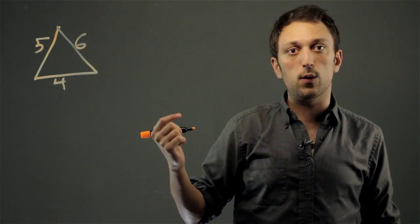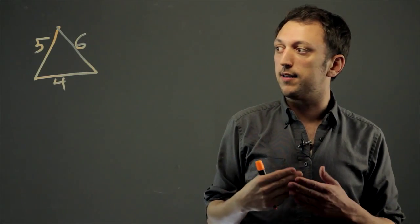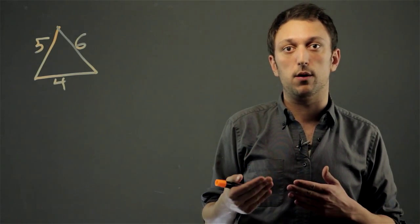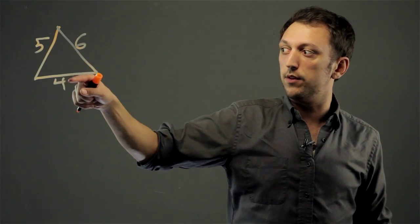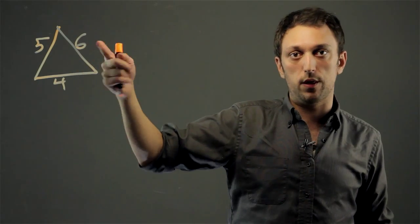So 5, 6, and 4 work because they satisfy the Triangle Inequality Theorem, meaning all sides of the triangle, for all sides, two of the sides have to add up to more than the third side.